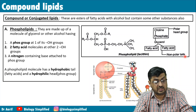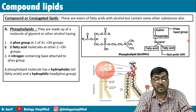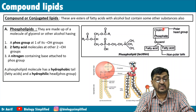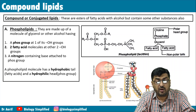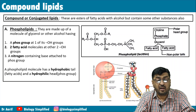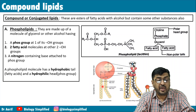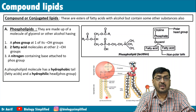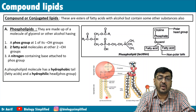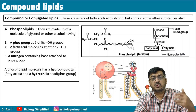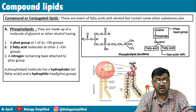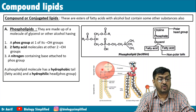In exam format, you may see phospholipid drawn with glycerol in the center, two fatty acid chains (R1, R2) on two OH groups, and phosphate on the third OH group with an attached nitrogen-containing base. The fatty acid tails are hydrophobic and the phosphate-nitrogen head is hydrophilic — this is the hydrophilic head and hydrophobic tail structure of the phospholipid bilayer in the cell membrane.